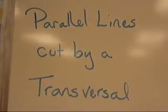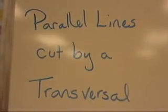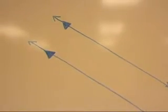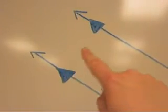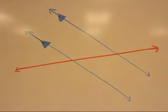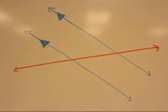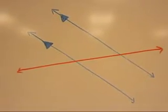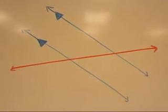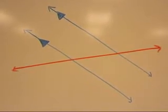Parallel lines cut by a transversal. First, let's look at parallel lines. I have two lines — notice the arrowheads — and up here, notice these shapes. These triangles are telling me that these lines are parallel. The red line I have added is called a transversal. A transversal creates some special angles when it cuts through parallel lines.